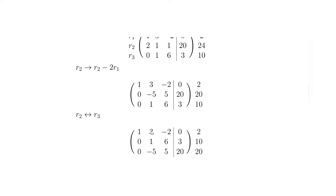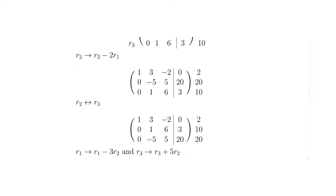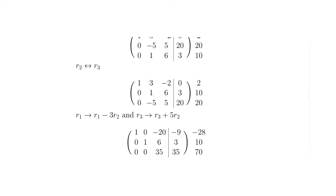Now we can concentrate on getting the 3 in row 1 and the -5 in row 3 to become zeros. Row 1 becomes row 1 minus 3×row 2, and row 3 becomes row 3 plus 5×row 2. That way we affect just enough row 2 to eliminate each of those values to zero.